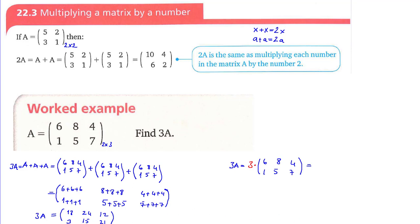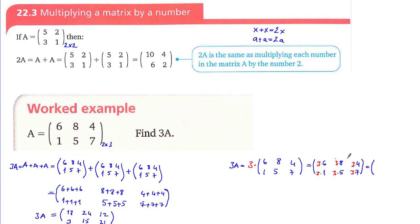I'm going to write the numbers with some distance and put the 3 in front of them. You multiply the scalar 3 inside the matrix, one by one with all entries: 3 times 6, 3 times 8, 3 times 4, 3 times 1, 3 times 5, 3 times 7. We didn't skip any of them.